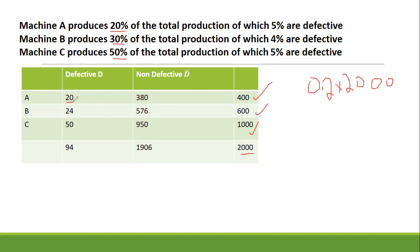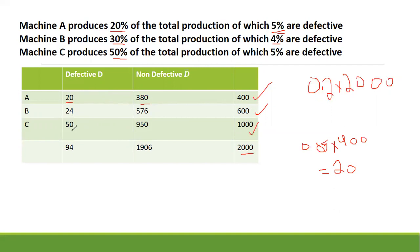Now, how do we get the number 20? From machine A, we have 5% are defective. So, we write 0.05 multiplied by 400 and we get 20 defective items. So, 400 minus 20 gives 380 non-defective. Similarly, for machine B, we have 4% defective: 0.04 times 600 gives 24 defective. And for machine C, similarly, we get 50 defective items.